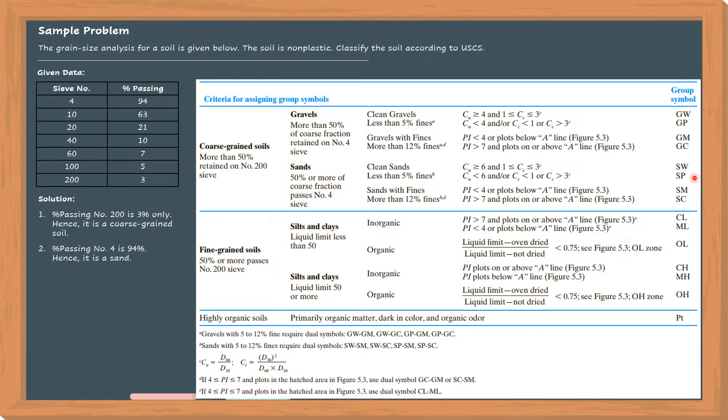Next, it is either SP or SW because the soil is non-plastic. From the four sand categories, only SW and SP are considered non-plastic because SM and SC are plastic - sand with fine materials. So only two options remain: it's either SW or SP. Now let's proceed to the category in which we can classify the sand as either SW or SP.